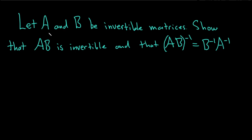In this problem, we have two invertible matrices A and B, and we have to show that the product A times B is invertible, and that the inverse is given by the following formula. So AB inverse is equal to B inverse A inverse.